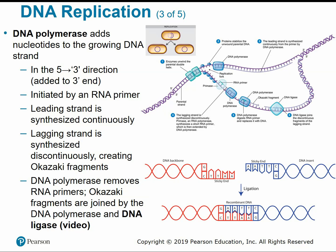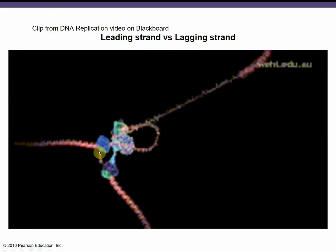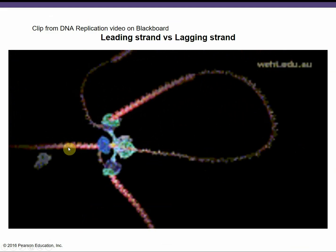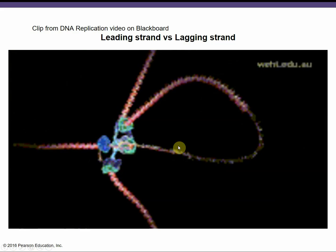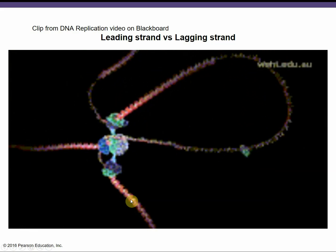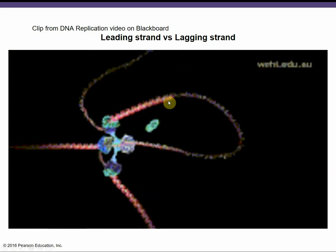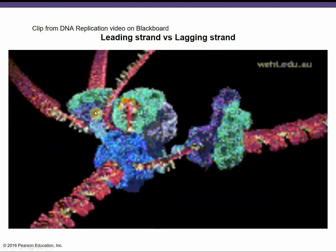DNA ligase base pairs the ends of our Okazaki fragments and forms a ligation — think like a ligature, tying something together. So ligase ties the DNA fragment ends together to create a complete strand. Normally in lecture I would show a video of this process; I'll add a link below. Here is a brief clip showing the leading and lagging strands: the leading strand continuously cranking out new DNA, the lagging strand done in loops or fragments.